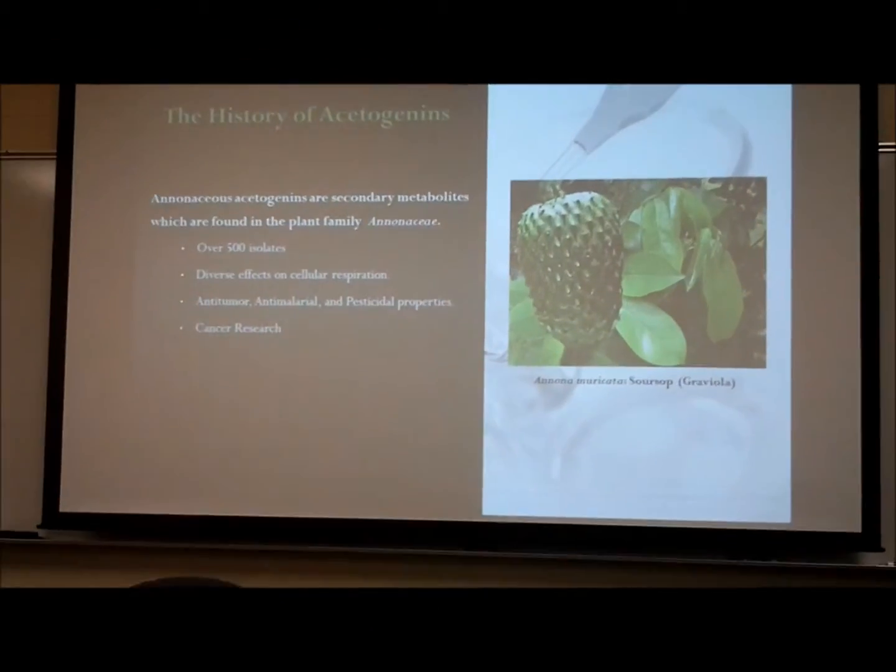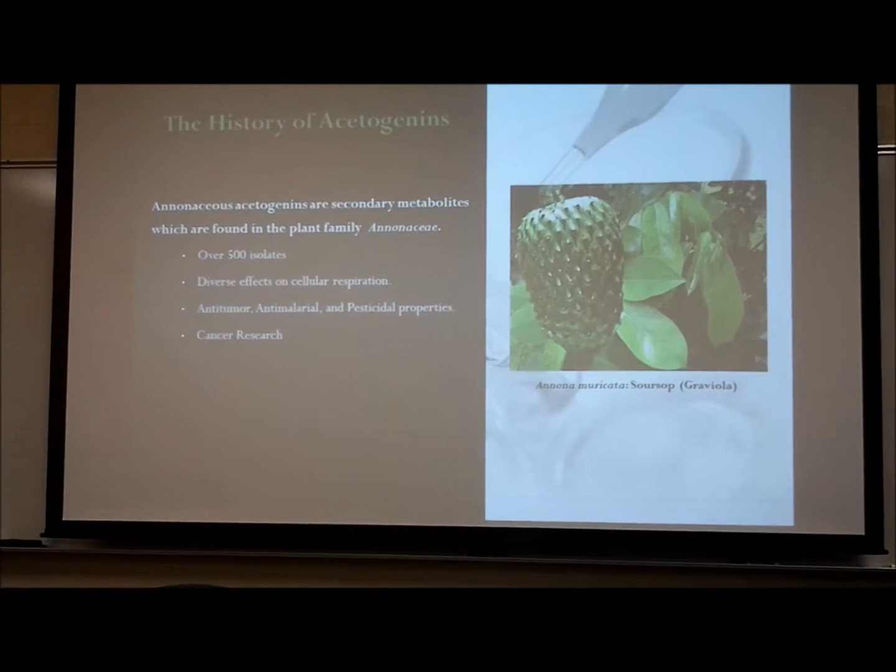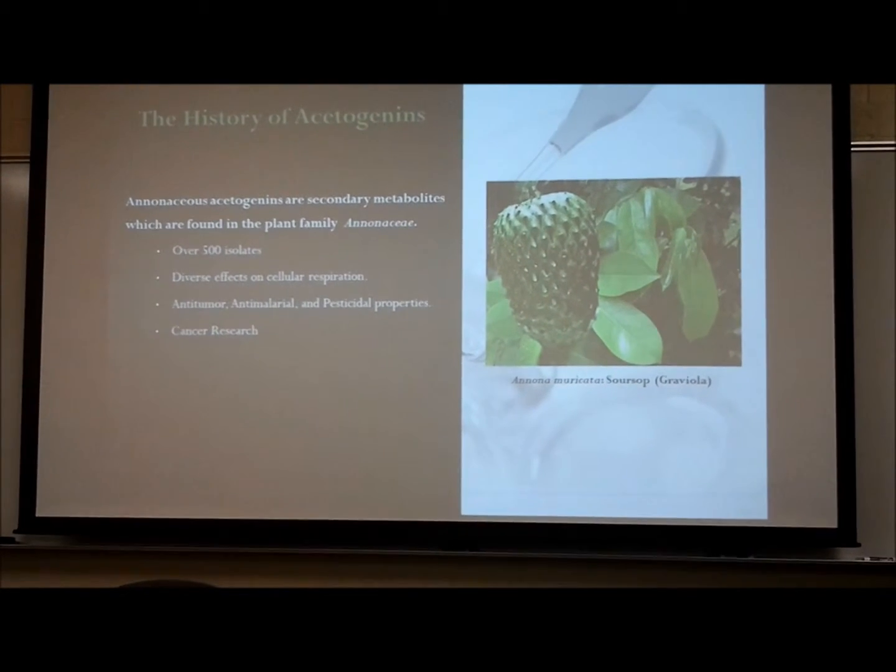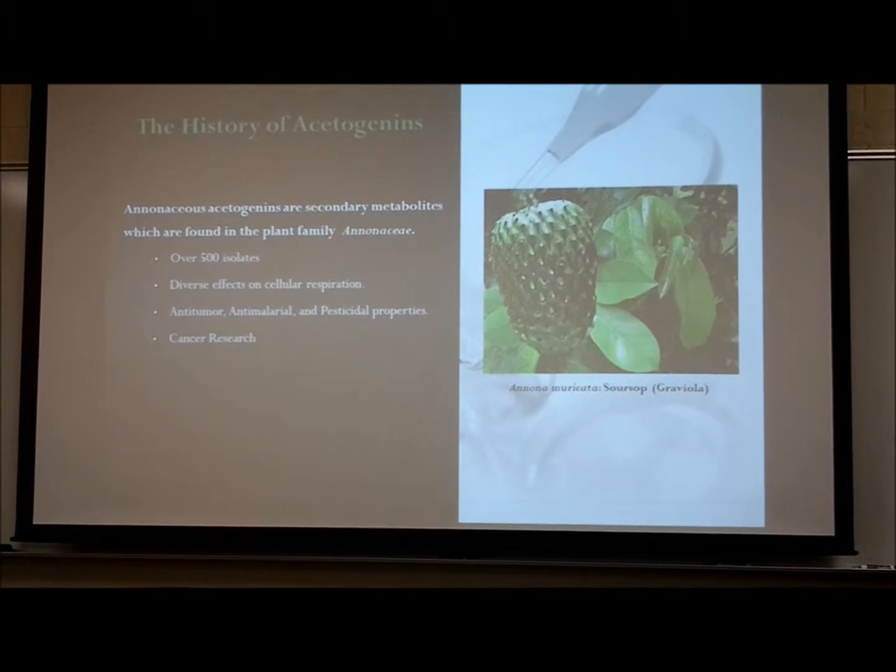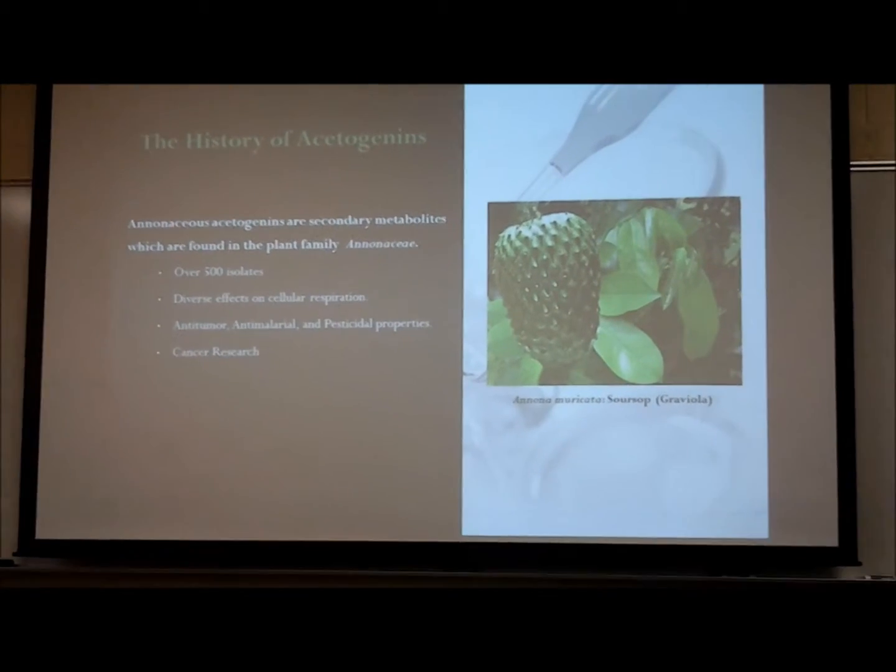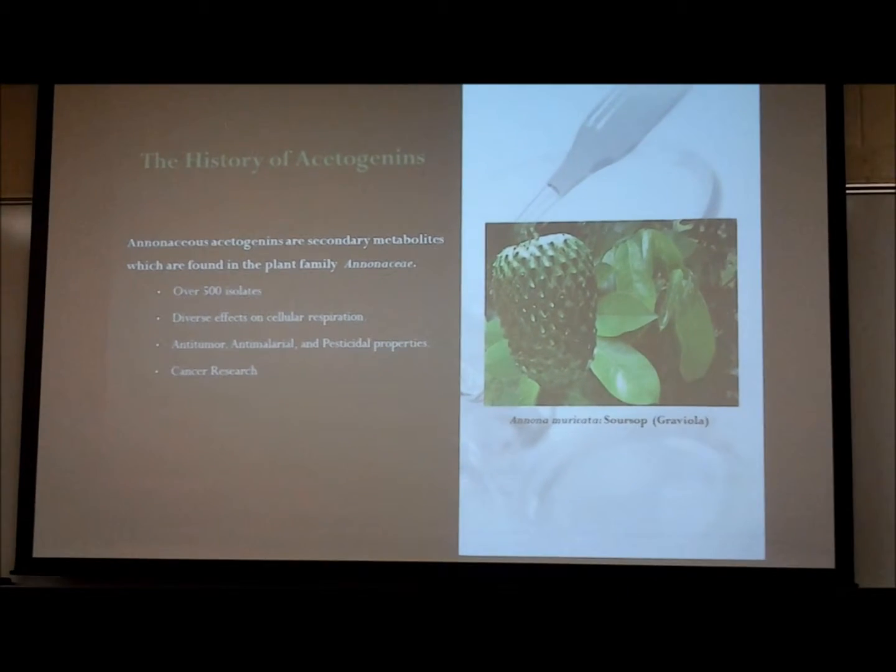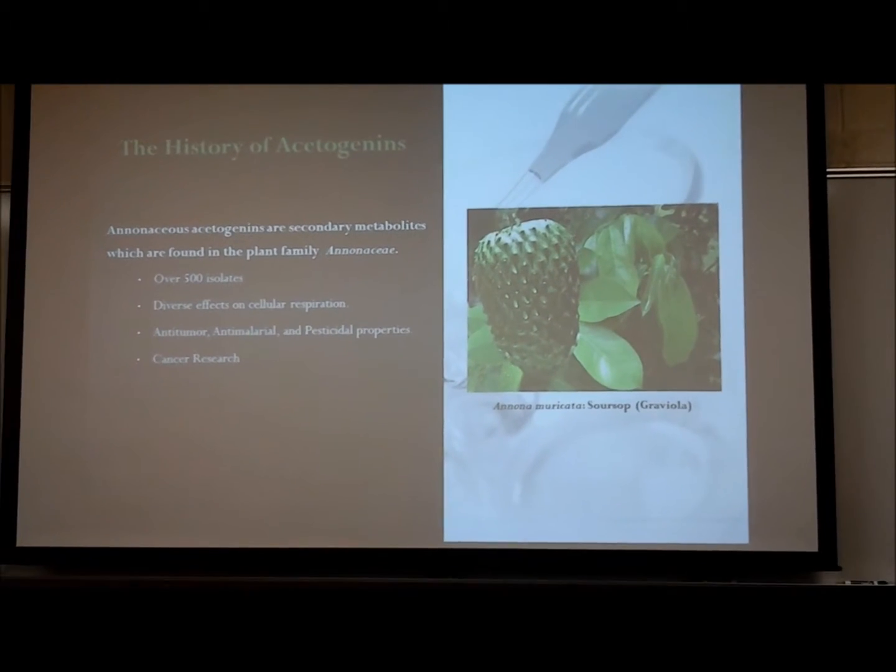The history of acetogenins: Annonaceous acetogenins are secondary metabolites which are found in the plant family Annonaceae. More than 500 have been isolated. The extracted polyketides have very potent and diverse effects on cellular respiration.